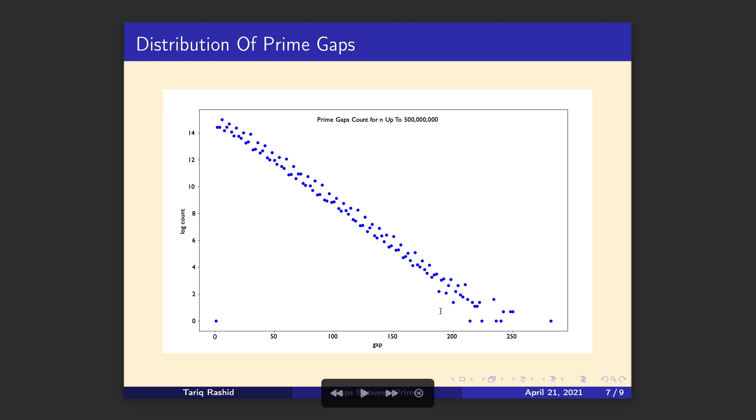And what it says, the first thing we see is that because this kind of chart, this line almost goes down with gap, it says the larger the gap, the rarer those prime gaps are. So there's less of them. For smaller gaps, we can see that they occur more often. Remember, this is a log count. Just by taking the log of the count, we get a straight line.